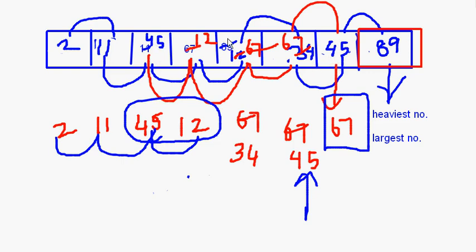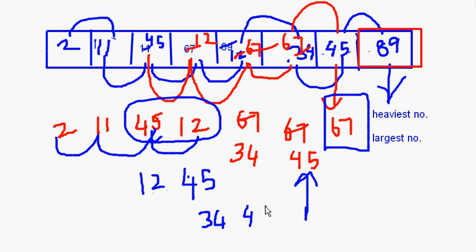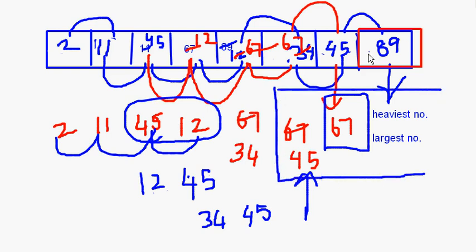Actually I have put two 45s — one 45 is here and one 45 is there, so there is a repetition. Anyway, with 2, 11, 45, 45, 12: this 12 will come here and this 45 will go there. Then 45 and 34: 34 comes here, 45 goes there. Then 45 and 45 will be compared — they are both equal, so nothing will happen. So now the three largest numbers — 45, 67, and 89 — have come to the end.